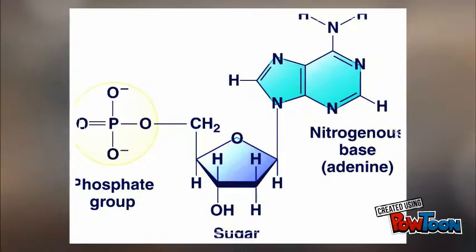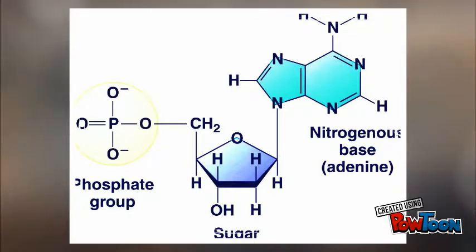Phosphate and sugar bond together to form the backbone of the DNA structure. In DNA, nitrogenous bases adenine and thymine bond together, and cytosine and guanine bond together — these are called base pairing rules. Each arrangement of these nitrogenous bases allows for the diversity of every organism.